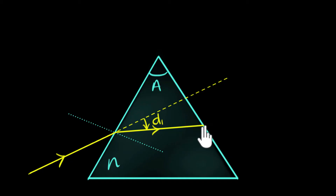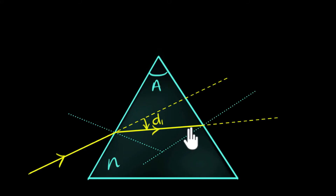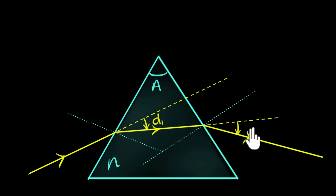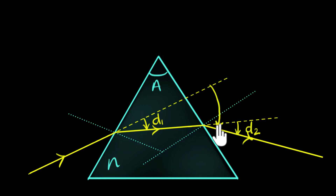Now, if it weren't for refraction at the second surface, the ray would have continued straight. But again it bends, so we draw another normal. This ray is moving from a denser to a rarer medium, so it bends away from the normal — again downwards. If we call this second angle D2, then the total deviation that our incident ray has suffered turns out to be D1 plus D2.